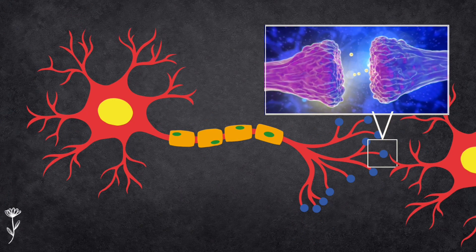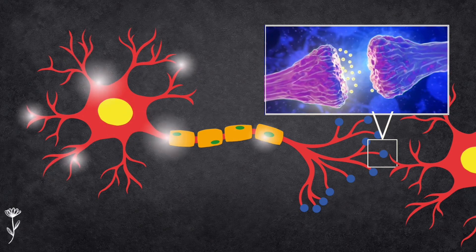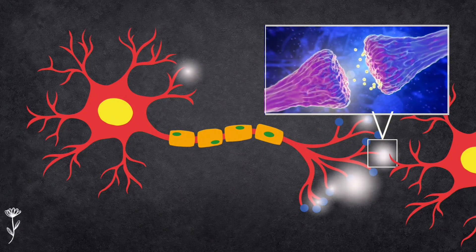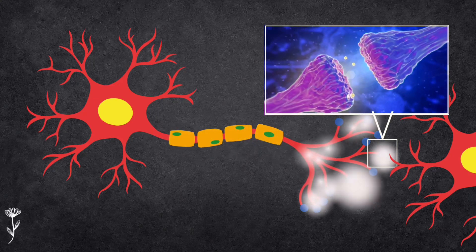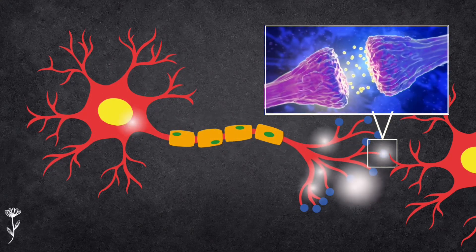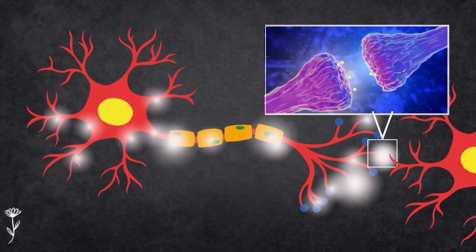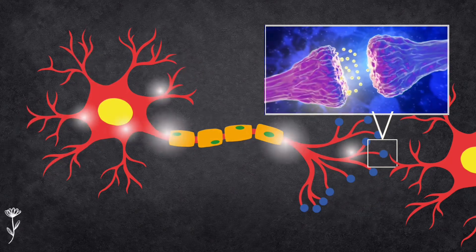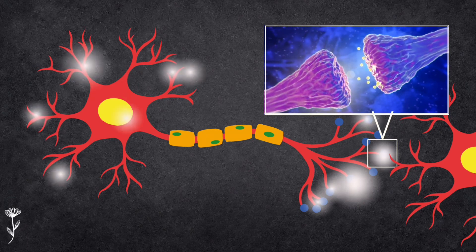As the nerve impulse travels down the axon, it eventually reaches the very end, which we call the terminal buttons. These terminal buttons are like a storage unit filled with tiny chemical messengers known as neurotransmitters. When the nerve impulse reaches the terminals, it's like opening the flood gates — neurotransmitters spill out into a tiny gap between neurons called the synapse. Neurotransmitters then interact with the receptors on the next neuron, transmitting the message from one neuron to another.